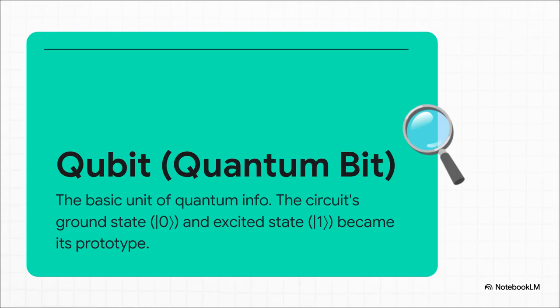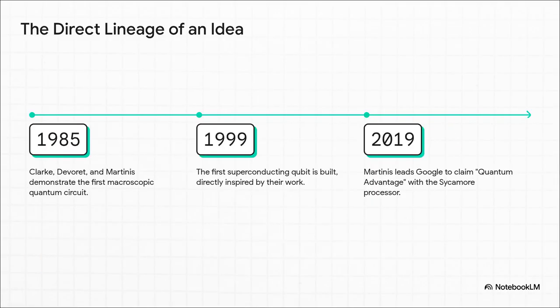You see those two energy levels they measured? The lowest energy level, the ground state, and that first excited state? Well, that's what we now call a qubit. It's the fundamental building block of a quantum computer. The ground state is the zero, and that first excited state is the one. Their circuit wasn't just an artificial atom. It was the world's first prototype of a superconducting qubit.